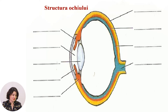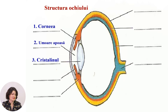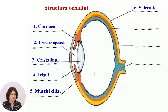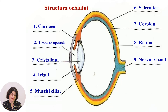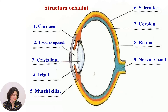The component parts of the eye are: the cornea, the aqueous humor, the crystalline lens, the iris, the ciliary muscles, the sclera, the choroid, the retina, and the optic nerve. Next, we will focus on one component of the eye: namely, the crystalline lens.